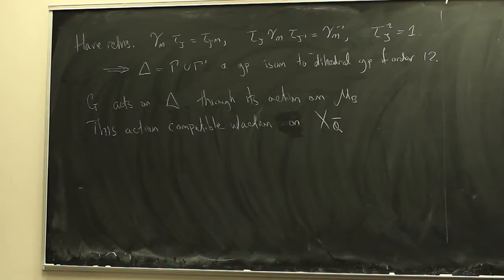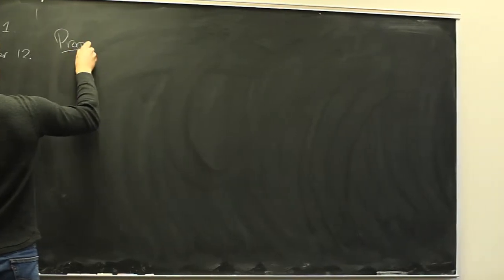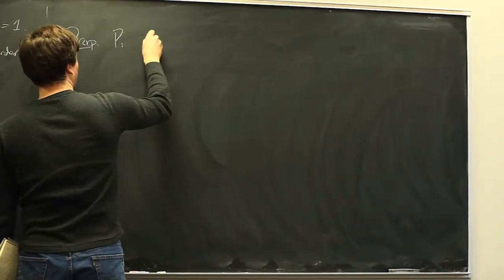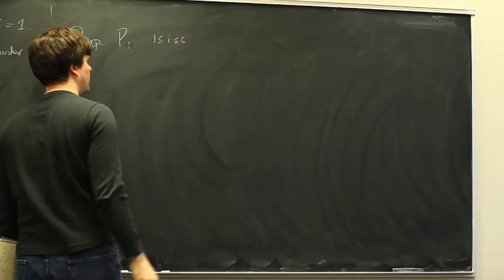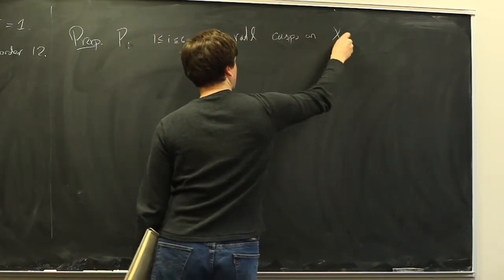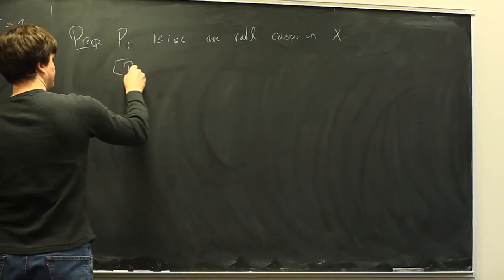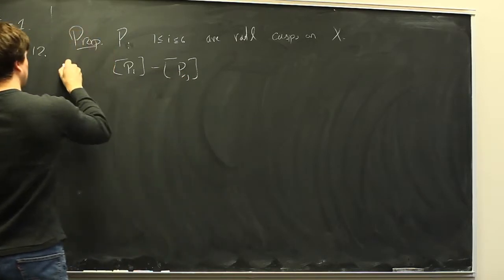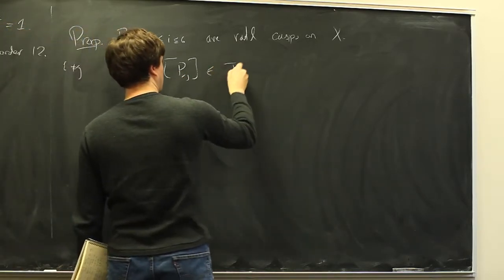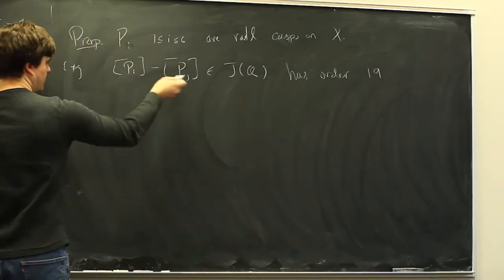Now let's go over results of Ogg about the cusps and what they give in the Jacobian. Let p_i for i between 1 and 6 be the rational cusps. The statement is that for i ≠ j, the difference p_i − p_j, as a point in the Jacobian, has order 19. Furthermore, all these differences generate the same cyclic subgroup.